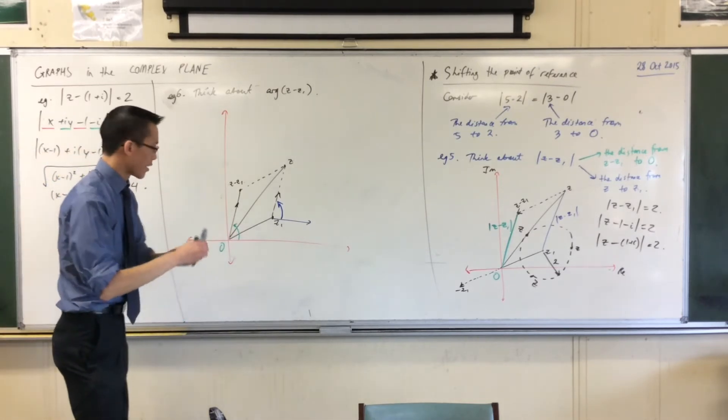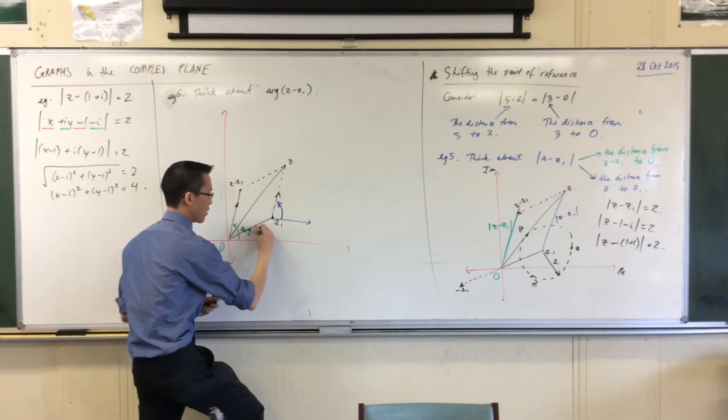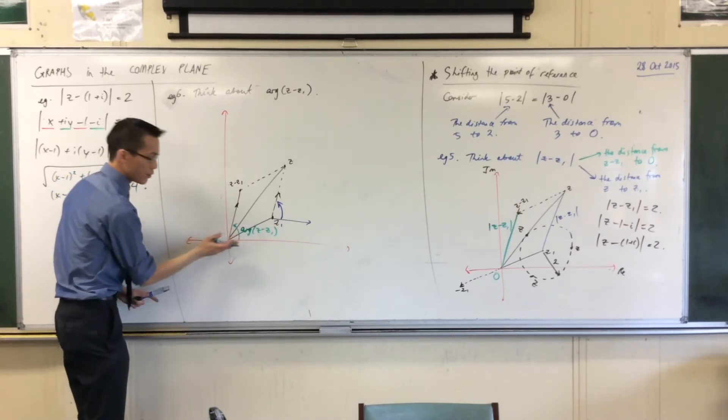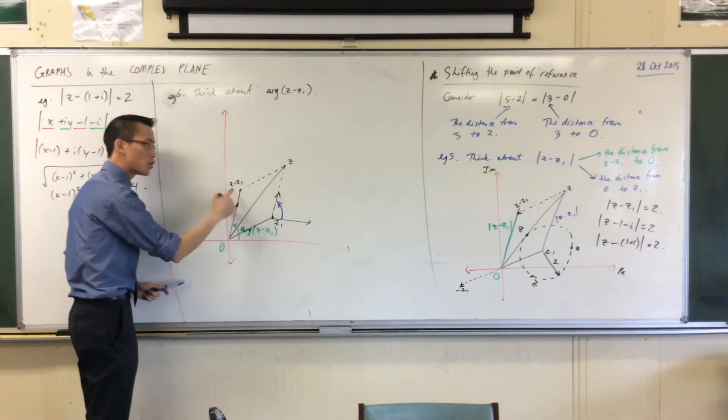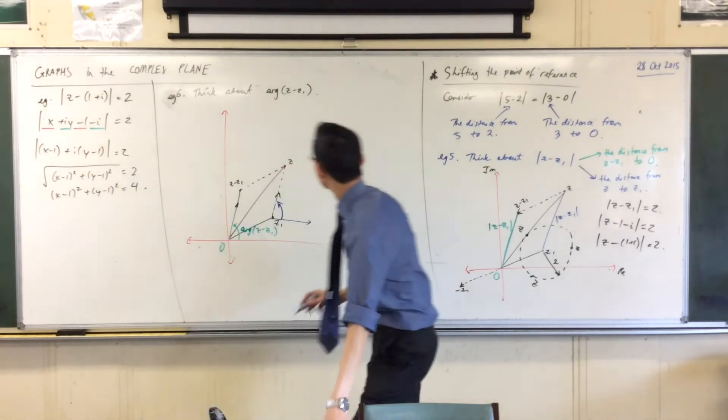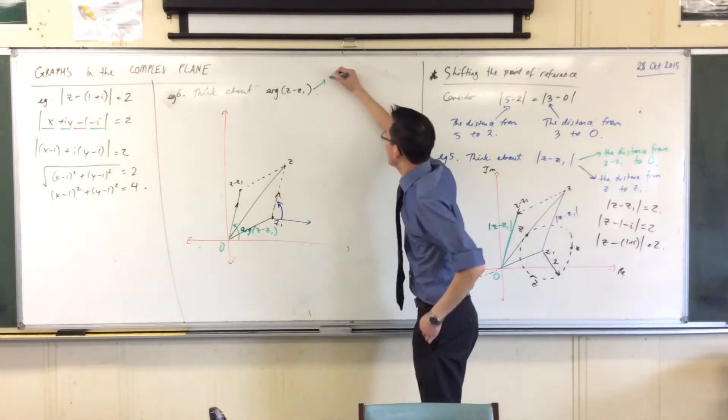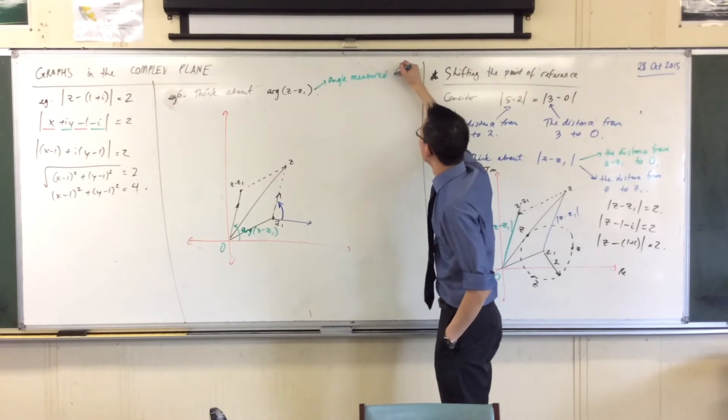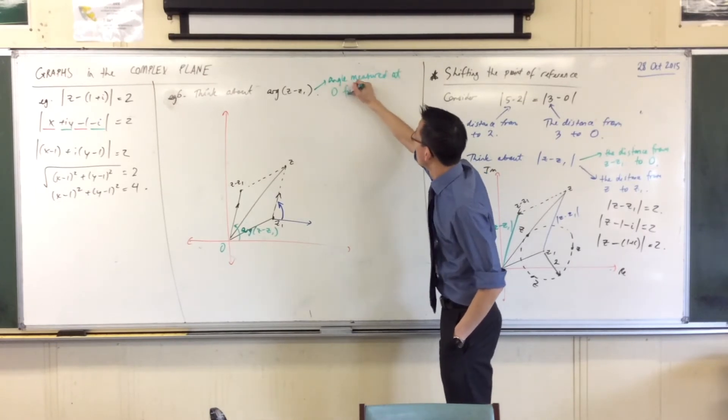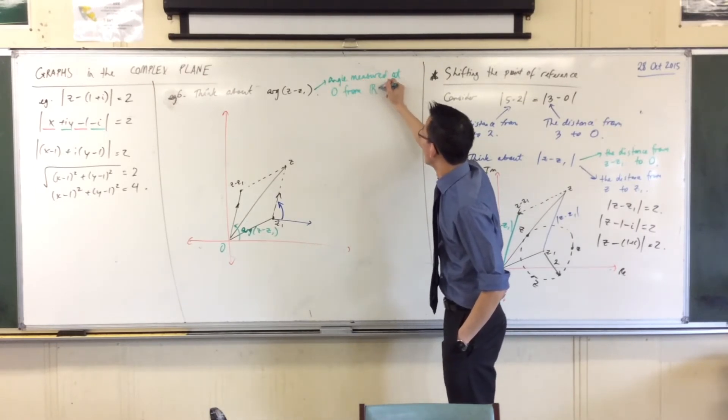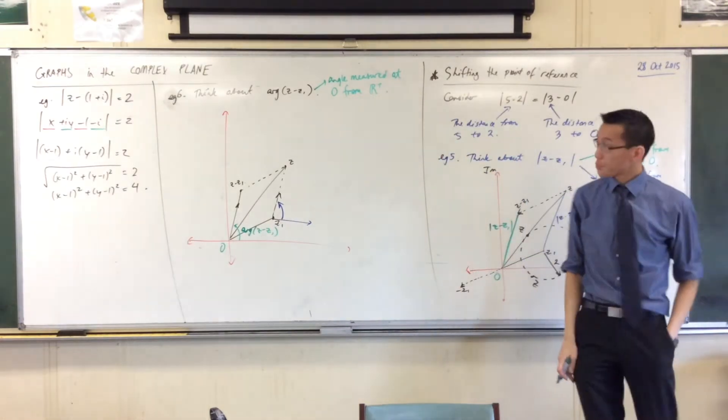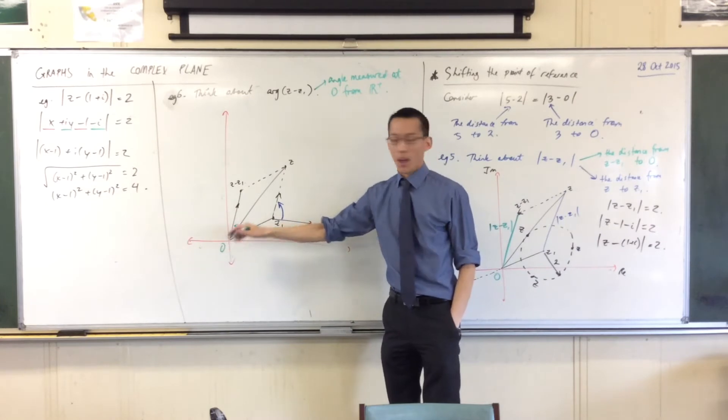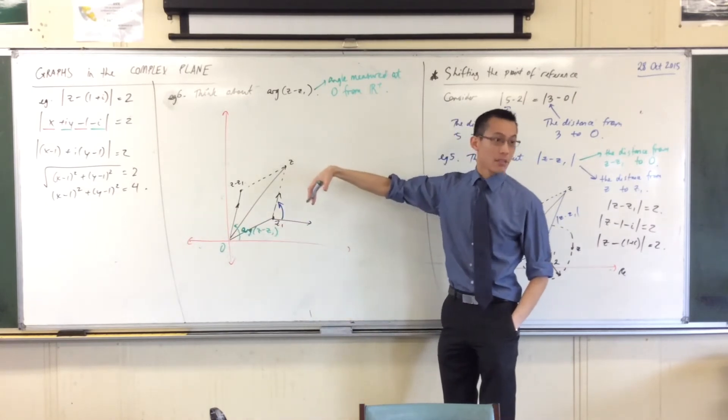So if I've got the same argument down here, arg z minus z1, that's from O and the positive real axis up to z minus z1. Let me get that first definition. So I guess the way I would say it is, the angle is measured at that point, but it's from the positive real axis.